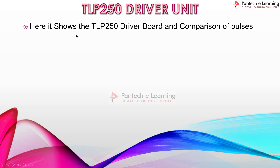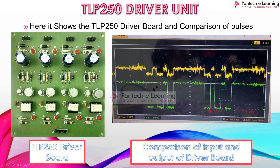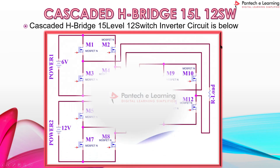Next, let's see the TLP 250 driver board and the comparison of pulses. This is the image of the TLP 250 driver board, and this is a comparison of input and output pulses. Here this is the input pulse applied, and here we can get the output pulse. The image shown is a four-leg driver board — four pulses can be given as input, and those four pulses are isolated and amplified to get the driver output. The waveform comparison shows the controller pulse and the driver output pulse.